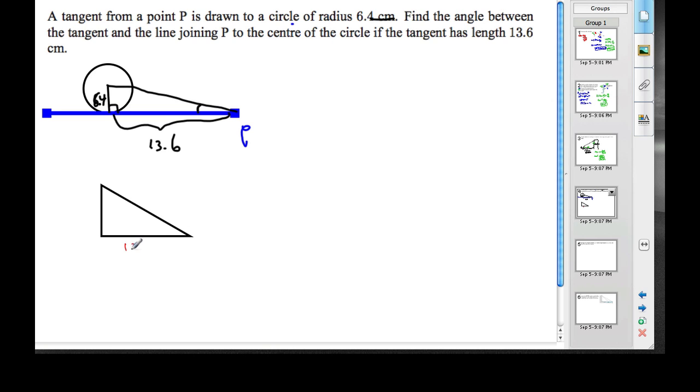So this is 13.6. Here's our right angle. This is 6.4. This is point P. And we now are looking for this angle.